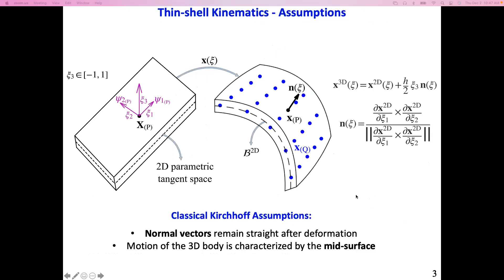That brings me to the thin shell kinematics assumption. We represent this 3D body as a 2D parametric tangent space. Once we have these parametric coordinates, we can represent the spatial position of every material point in the 3D body using this parametrization. X2D is the position of any given 3D material point projected on the 2D surface, H is the thickness of the shell, and N is the normal vector orthonormal to the tangent space. We respect the classical Kirchhoff-Love thin shell assumptions: normal vectors remain straight throughout deformation, and the motion of the 3D body is characterized by the mid-surface. This formulation is rotation-free, everything is described based on translational velocity degrees of freedom.